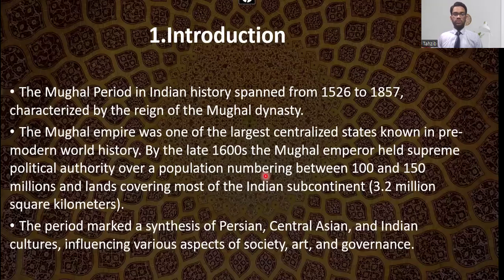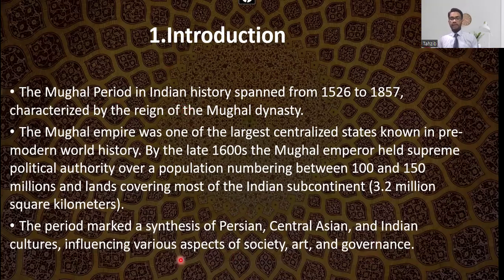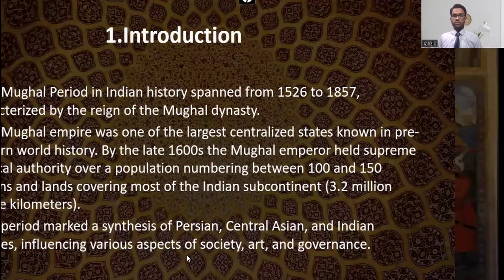The Mughal period in India spanned from 1526 to 1857. It was a mix of Persian, Central Asian, and Indian cultures, and it influenced various aspects of society and art, even to this day.